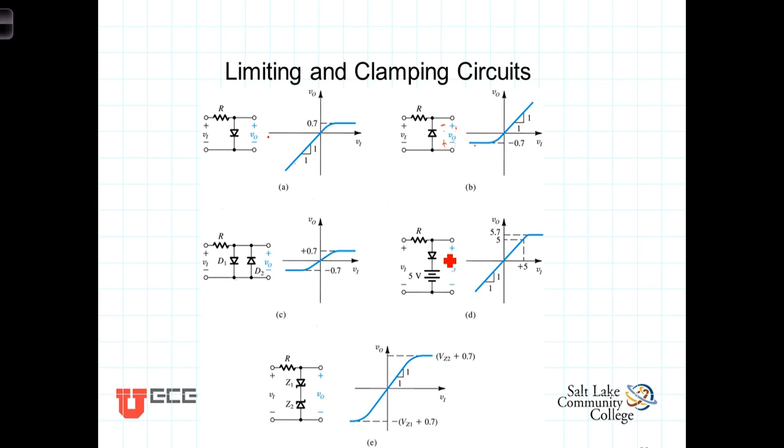And then when it's fully conducting, there will be a 7 tenths of a volt drop, and you'll have plus to minus 0.7, plus to minus the 5, so the output voltage then is clamped or limited at 5.7 volts.